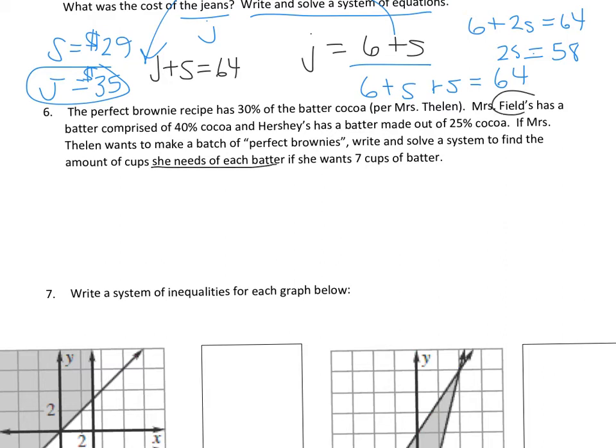So I'm going to let F be Fields and H be Hershey's batter. So if I know I want 7 cups, I know that Hershey's plus Fields equals 7 cups of batter. And then I have a percent that's relating the cocoa. I need to have an equation that's relating the cocoa. So I know that I want Mrs. Fields is 40% cocoa, and Hershey's is 25% cocoa.